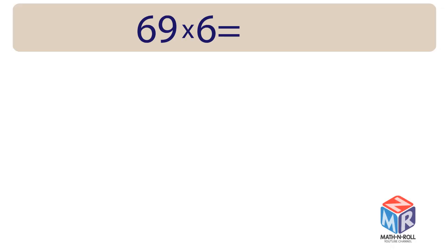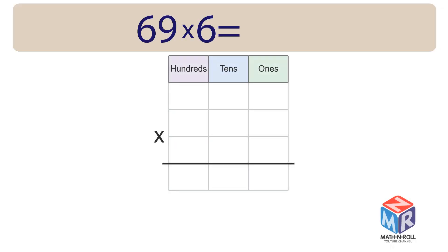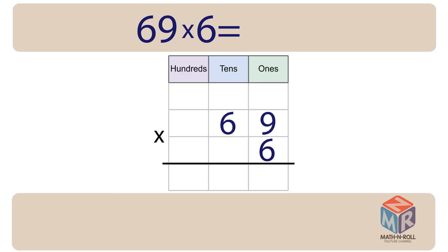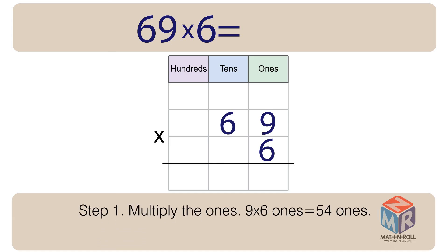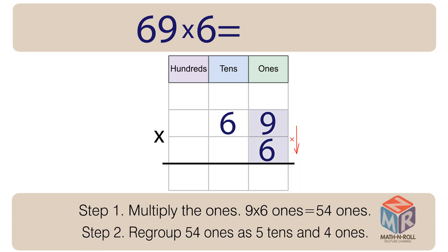Let's try another example, this time without drawing. 69 times 6. Step 1: Multiply the ones. 9 times 6 ones is equal to 54 ones. Step 2: Regroup 54 ones as 5 tens and 4 ones.